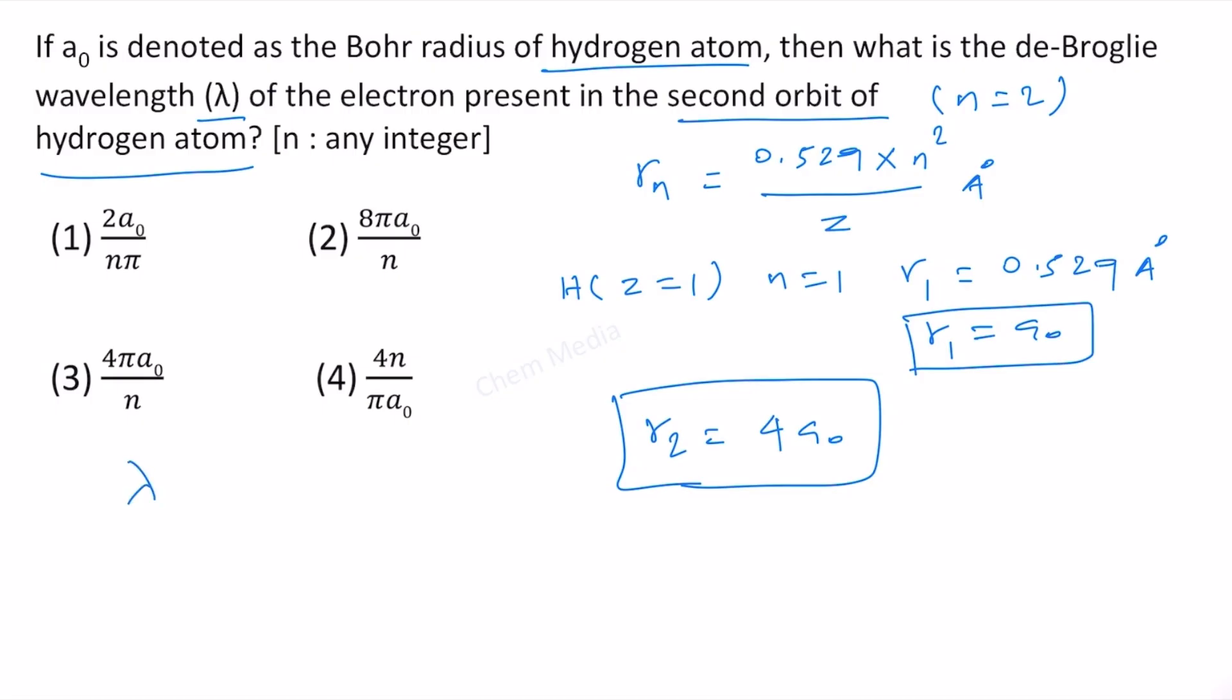Now, we know that de Broglie wavelength λ is equal to Planck constant h divided by mv. We also know from Bohr's theory that electrons can revolve only in those orbits where the angular momentum mvr must be equal to an integral multiple of h divided by 2π.